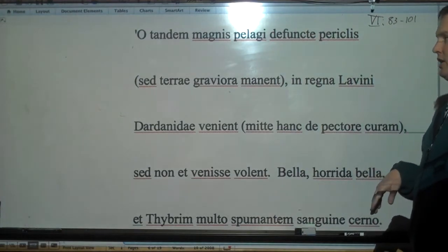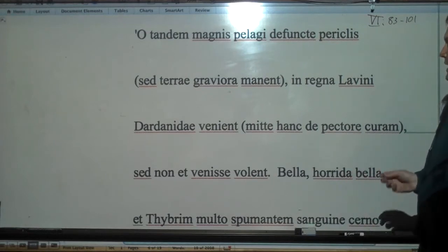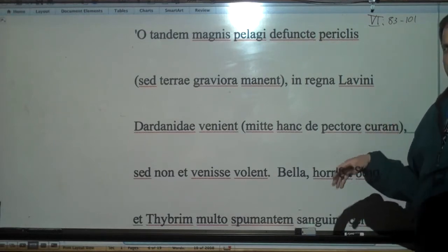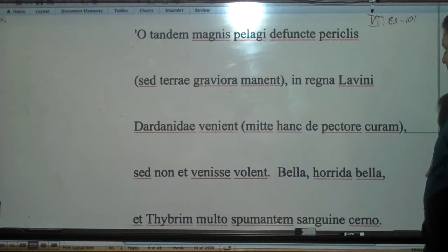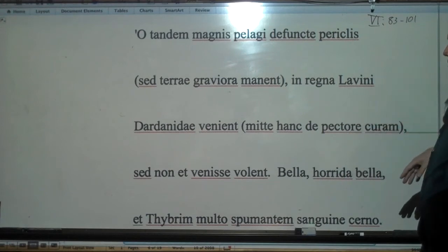Salve omnes. Today we're going to look at Book 6, lines 83 through 101. This is the part where the Sibyl gives her prophecy to the Trojans, which is quite spectacular, which I quite like, and then there's some more stuff coming after that. We'll see if we get to that.